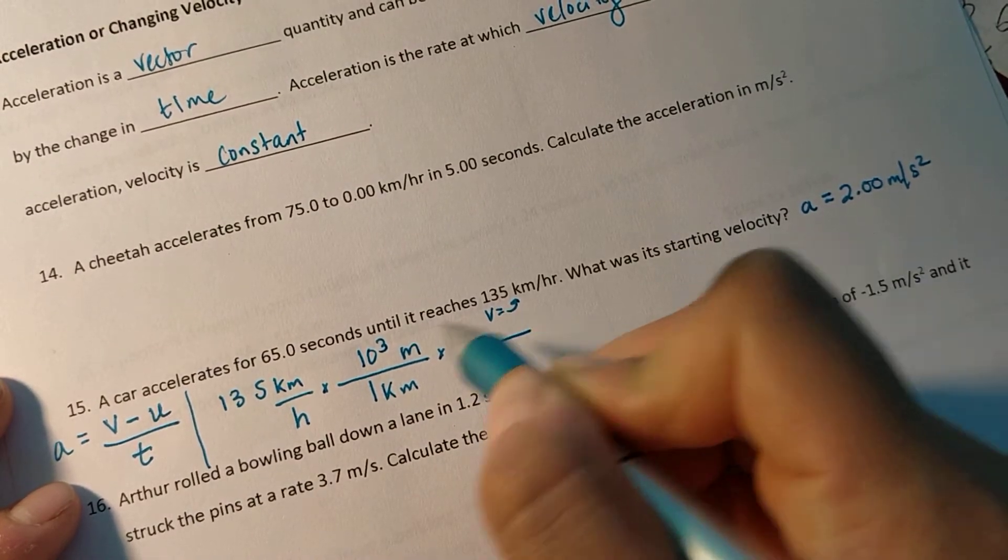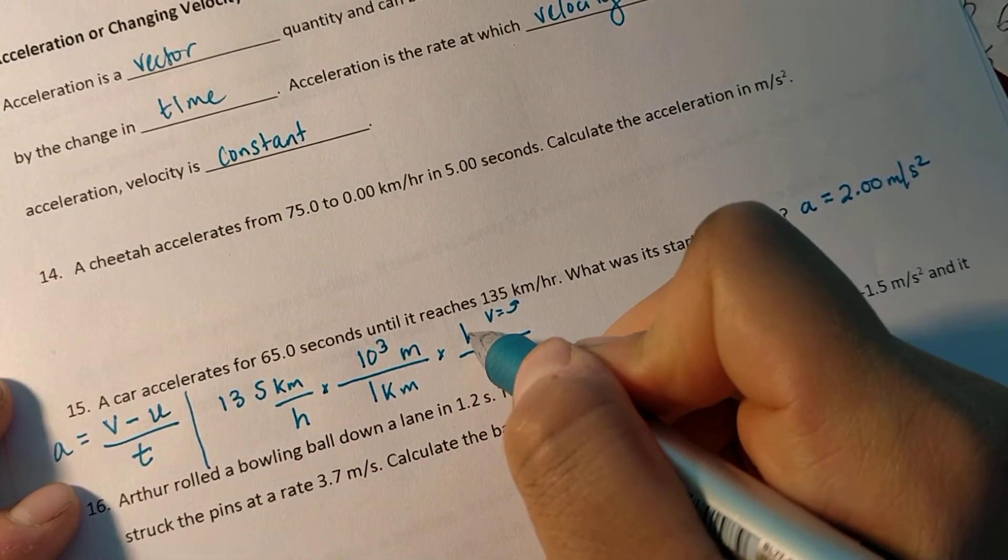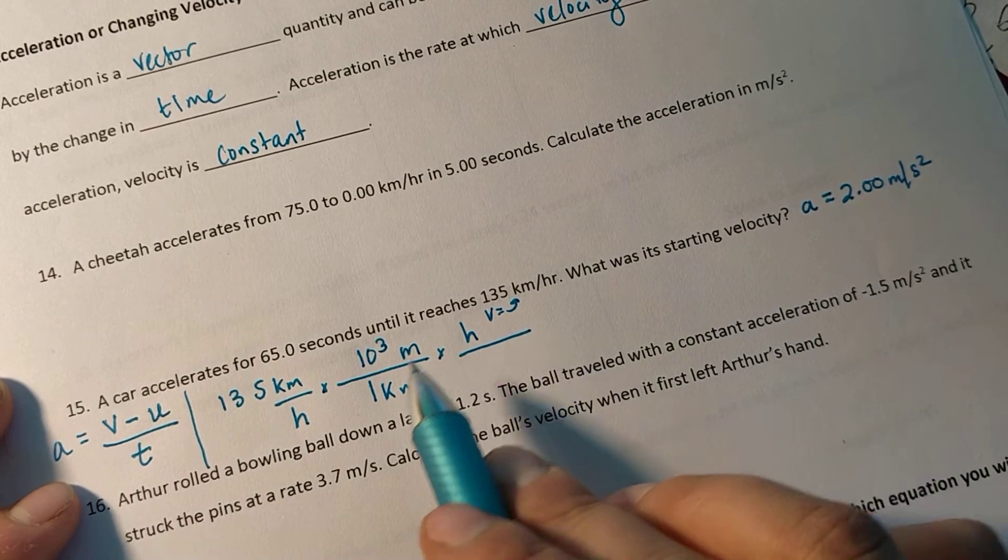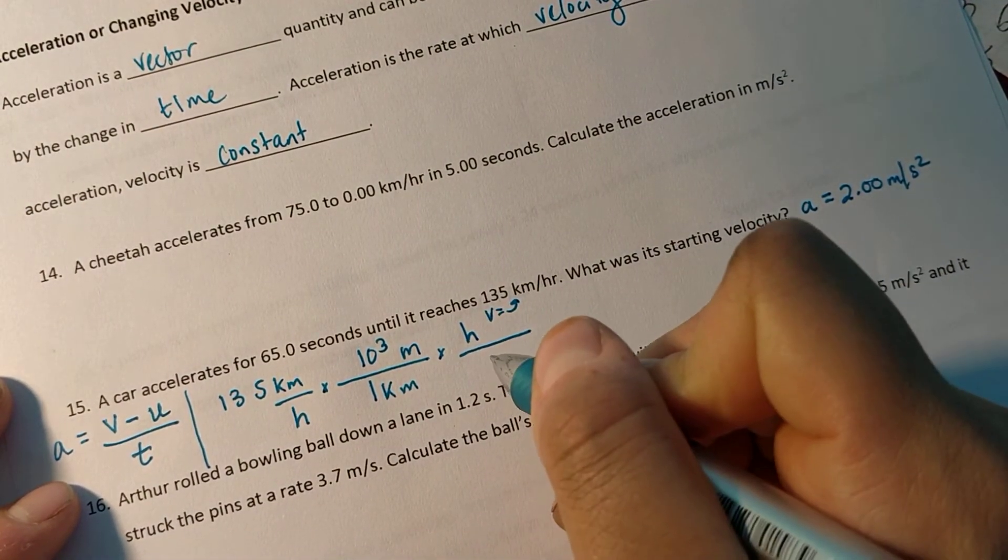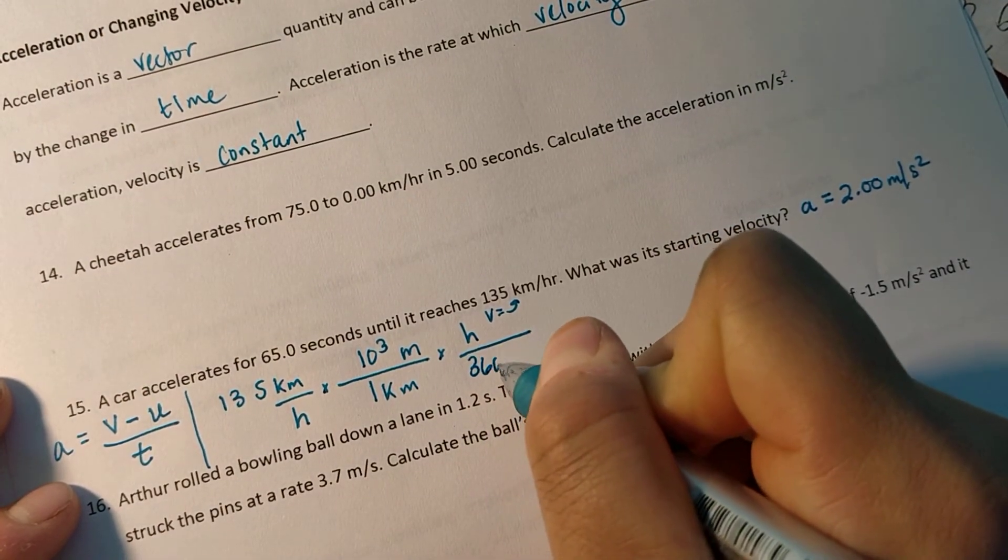And now I need to cancel my hour units. So I'm here in hours up top. And in one hour, there are 60 times 60, 3,600 seconds.